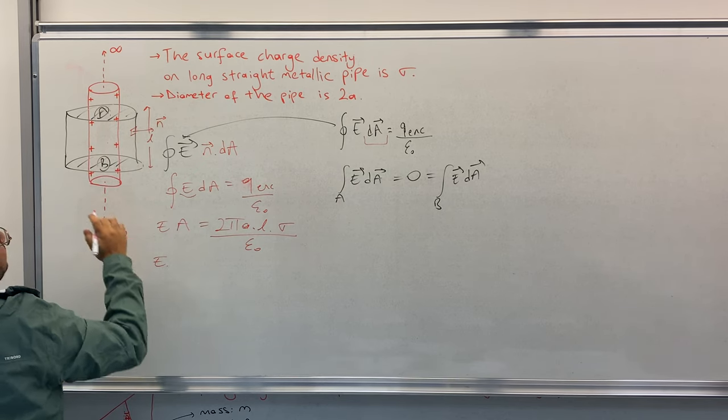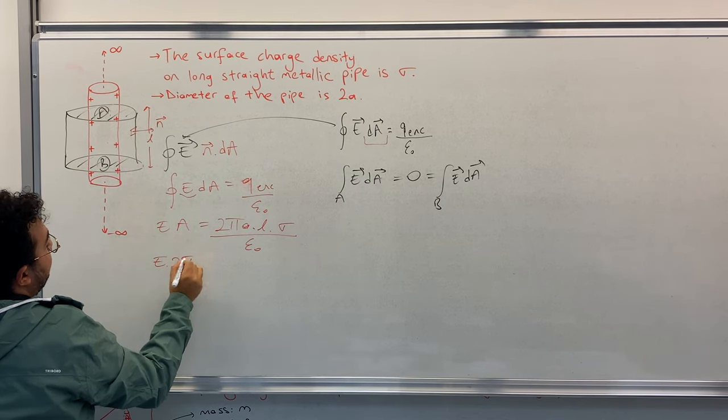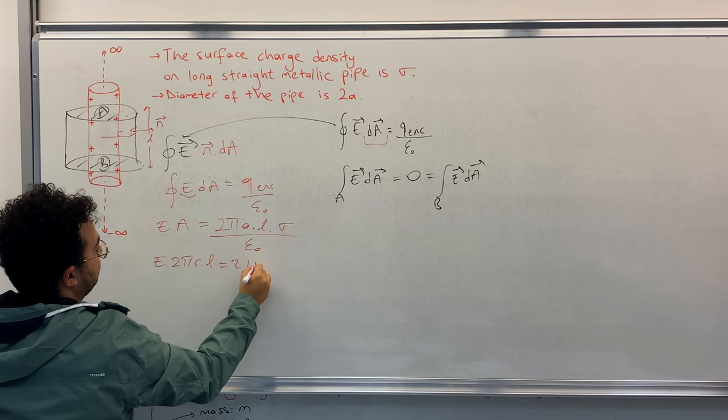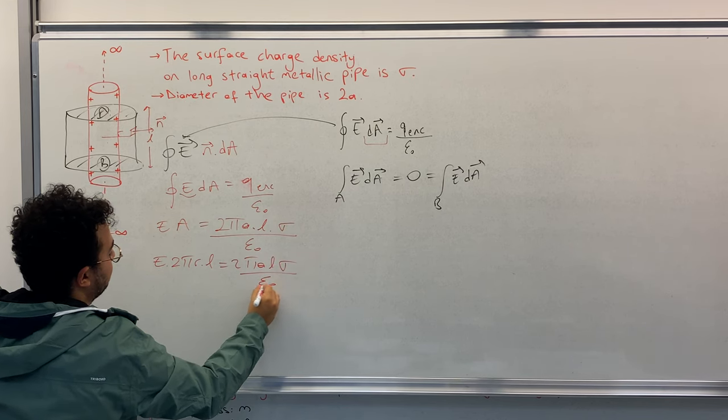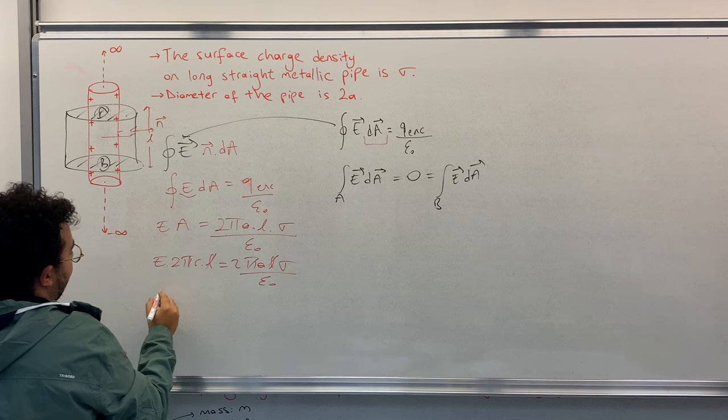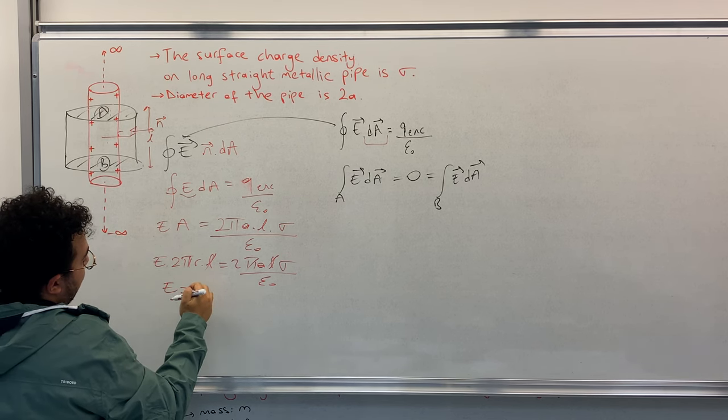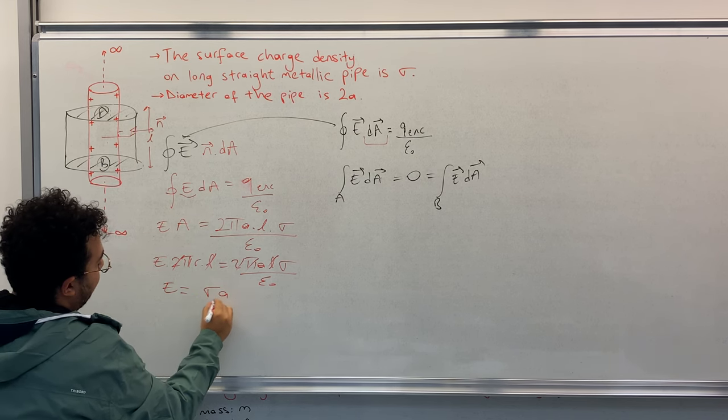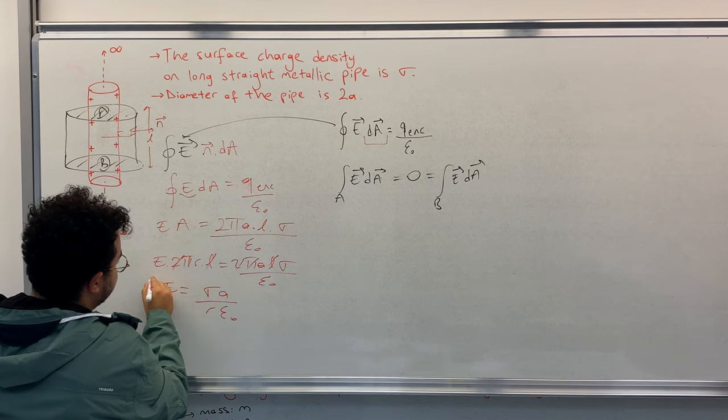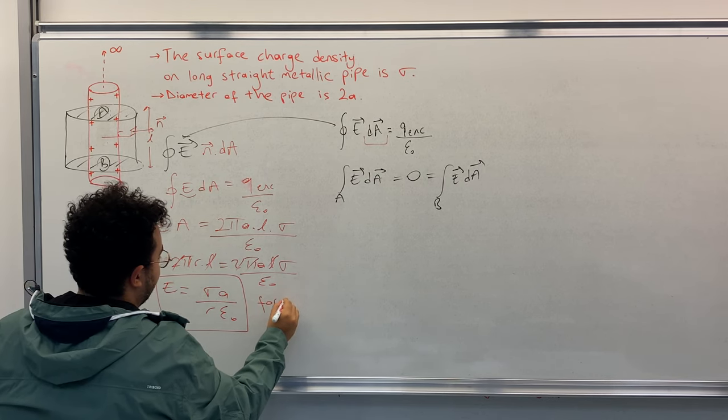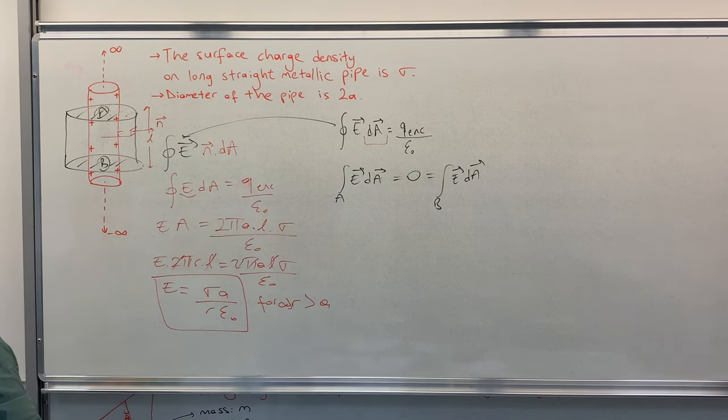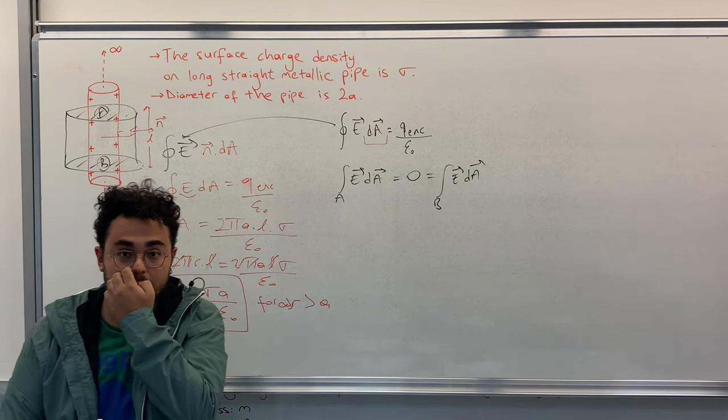And now we should also calculate A. E times A is E times 2πrL equals to 2πaLσ divided by epsilon zero, so π and L cancel. This is for r bigger than a, less than infinity.